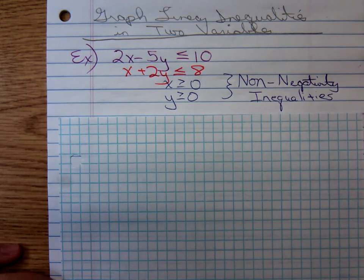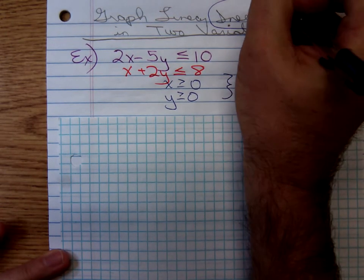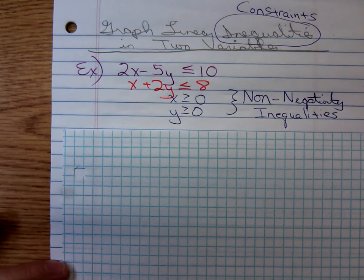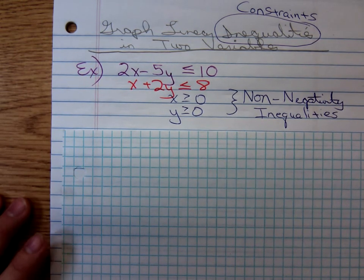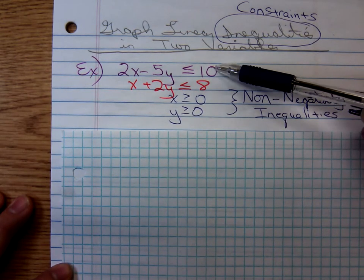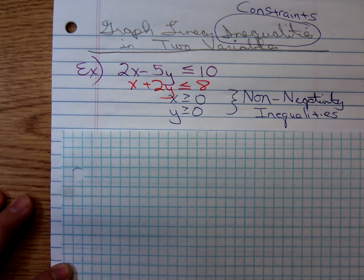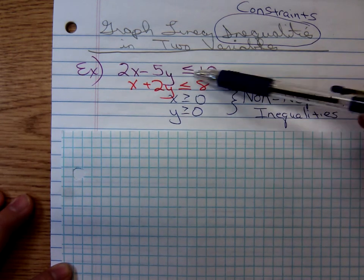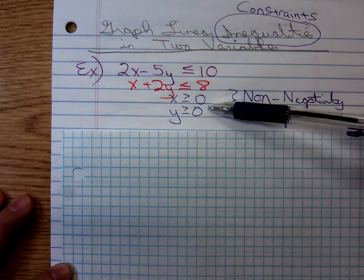I'll be referring to the inequalities as constraints. That's one of those terms you should get in your head because it just means an inequality. To solve, we're looking for all the ordered pairs that satisfy every one of these constraints. For example, something like 10, 10. If we plug in 10 for x and 10 for y, does the left side turn out to be less than or equal to 10? We're looking for all the ordered pairs on the xy grid that will make every one of these things true.